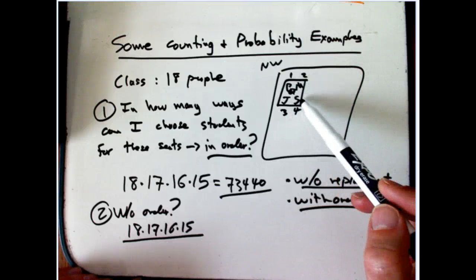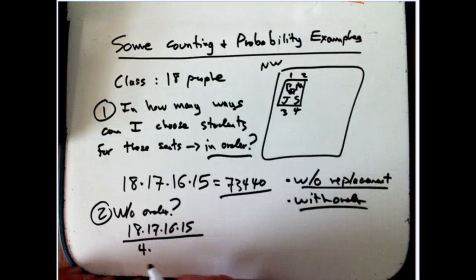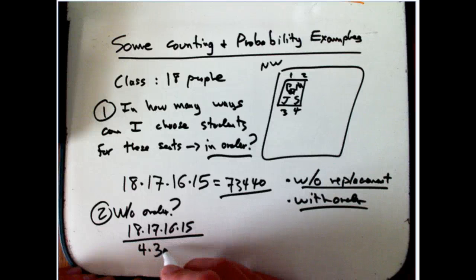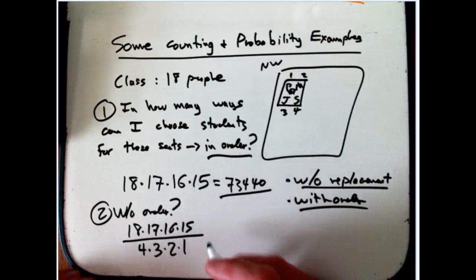Given that I've got those four students, I could put any one of the four in seat 1. I could put the three remaining students in seat 2, the two remaining in seat 3, and then there's only one choice for seat 4. So this is the principle of overcount systematically and then correct for the overcounting.